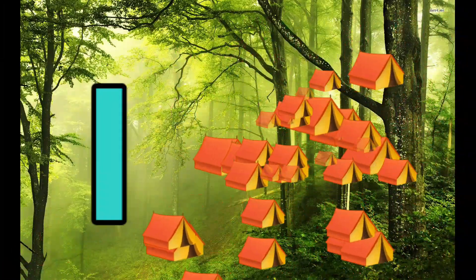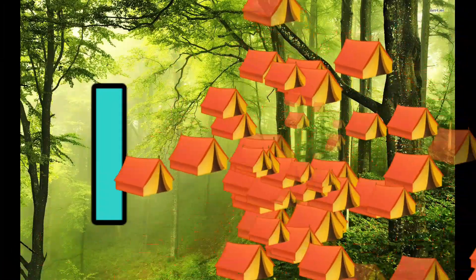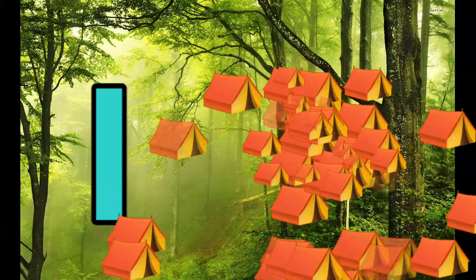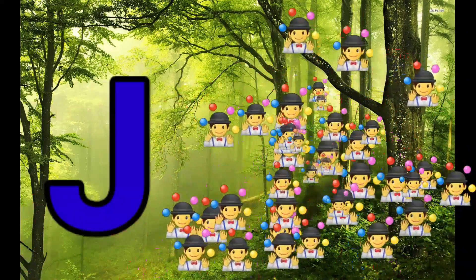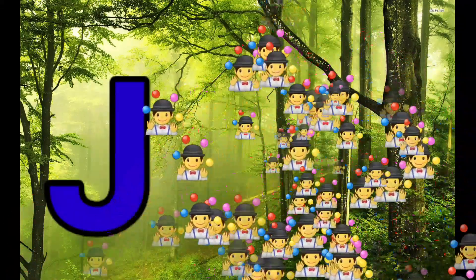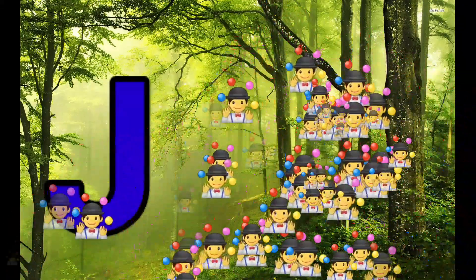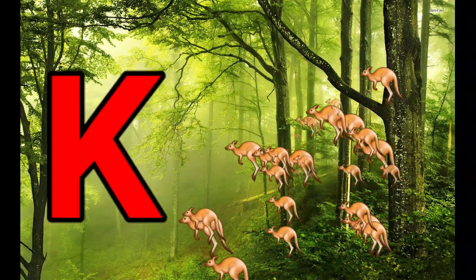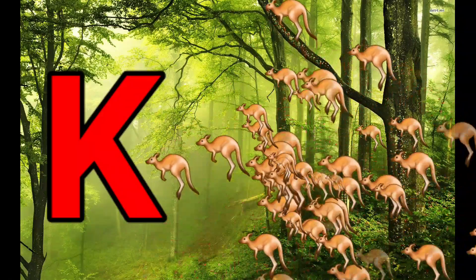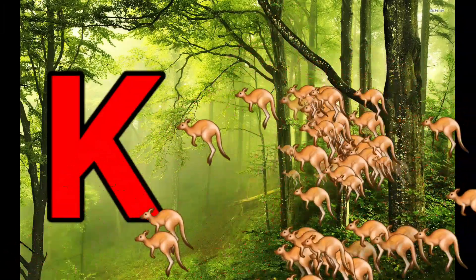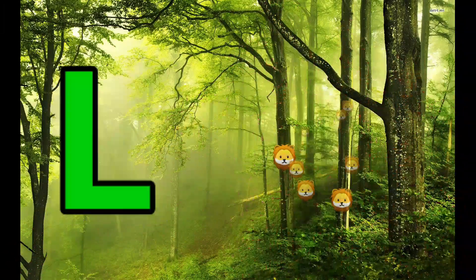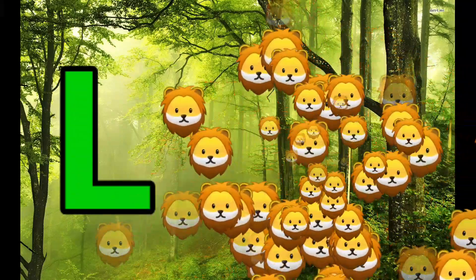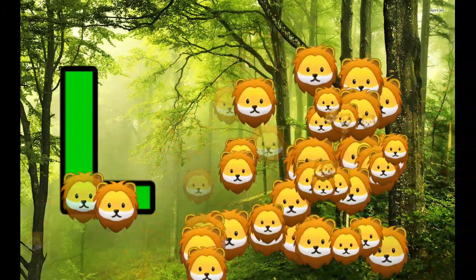I is for Igloo. I-I-Igloo. J is for Jump. J-J-Jump. K is for Kangaroo. K-K-Kangaroo. L is for Lion. L-L-Lion.